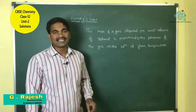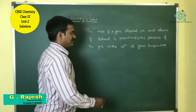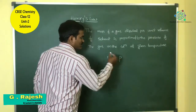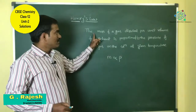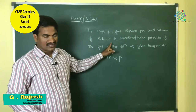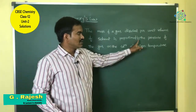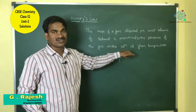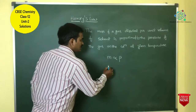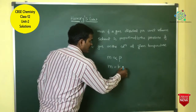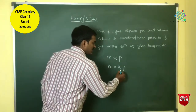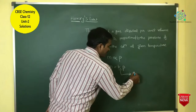Mathematically, small m — the mass of the gas dissolved per unit volume of solvent — is directly proportional to the pressure of the gas on the solution at a given temperature. So m is equal to k into P, where k is Henry's constant.